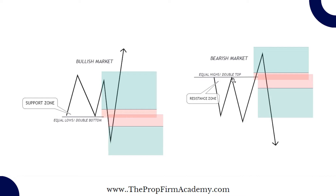Just the vice versa for the bearish scenario — traders who are not knowledgeable about this would obviously trade a double top and then have their stops taken out on the sell. Then breakout traders take this as a buy setup and eventually also get stopped out before the market continues the bearish move. Liquidity is basically what so many traders refer to as a stop hunt.